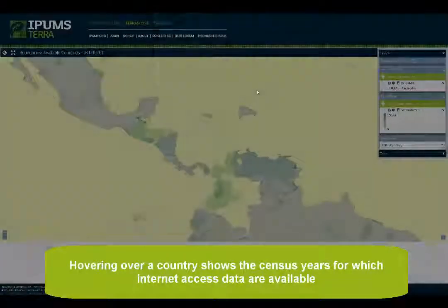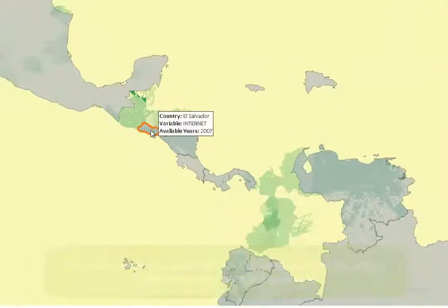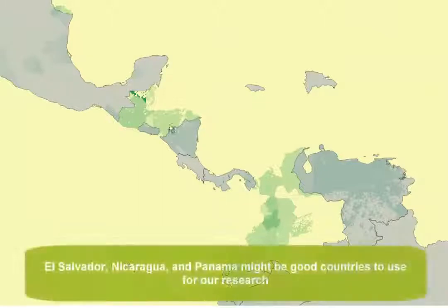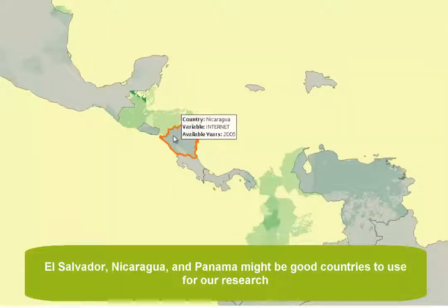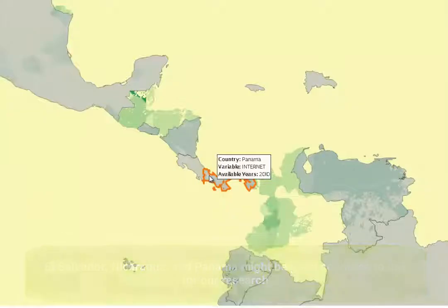Hovering over a country shows the census years for which internet access data are available. El Salvador, Nicaragua, and Panama might be good countries to use for our research.